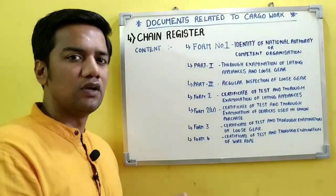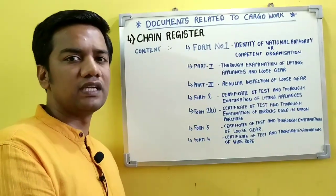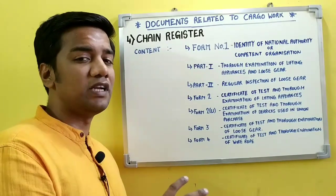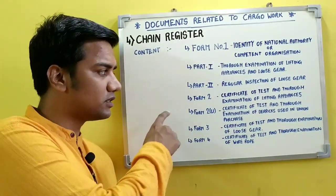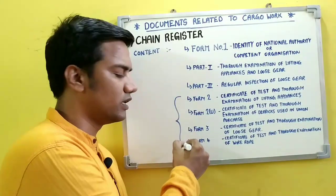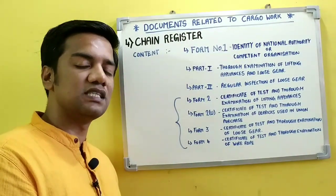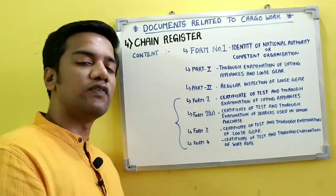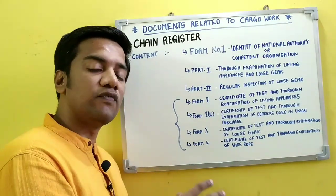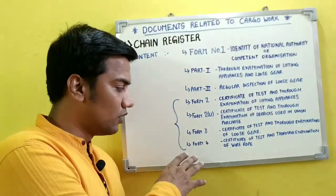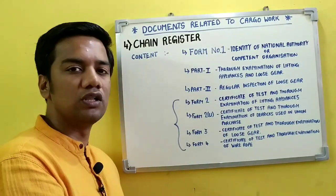The contents of the chain register are as follows. Form Number One includes the identity of the national authority or competent organization. Part One covers thorough examination of lifting appliances and loose gear; Part Two covers regular inspection of loose gear. The certificates are: Form Number Two — certificate of test and thorough examination of lifting appliances; Form Number Three — certificate of test and thorough examination of loose gear; Form Number Four — certificate of test and thorough examination of wire rope. Form Number Two also covers derricks used in union purchases.